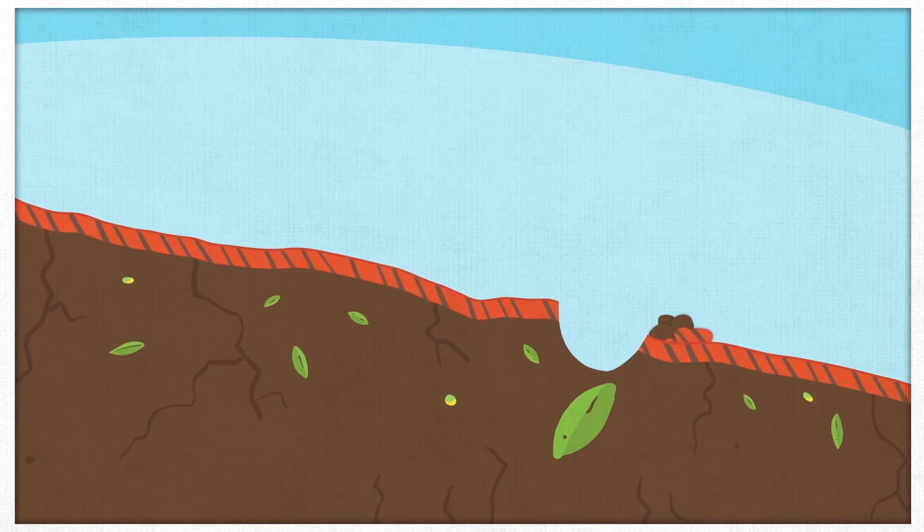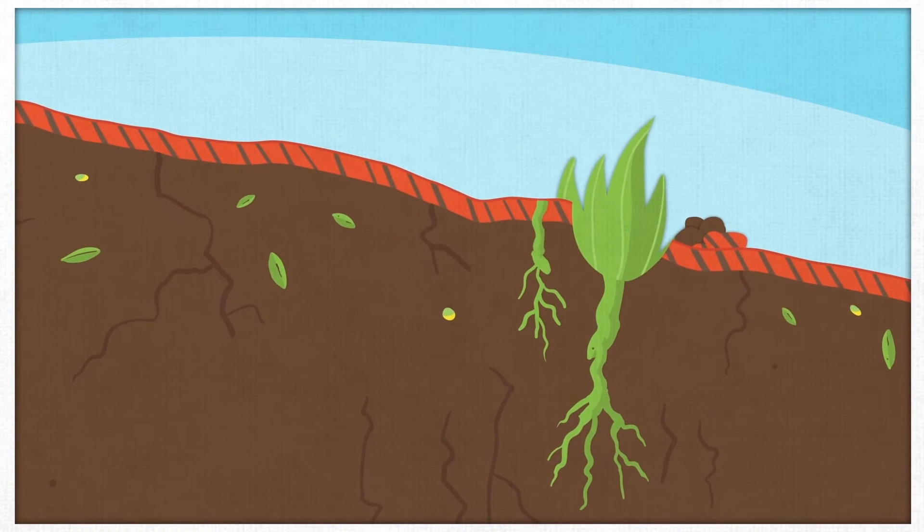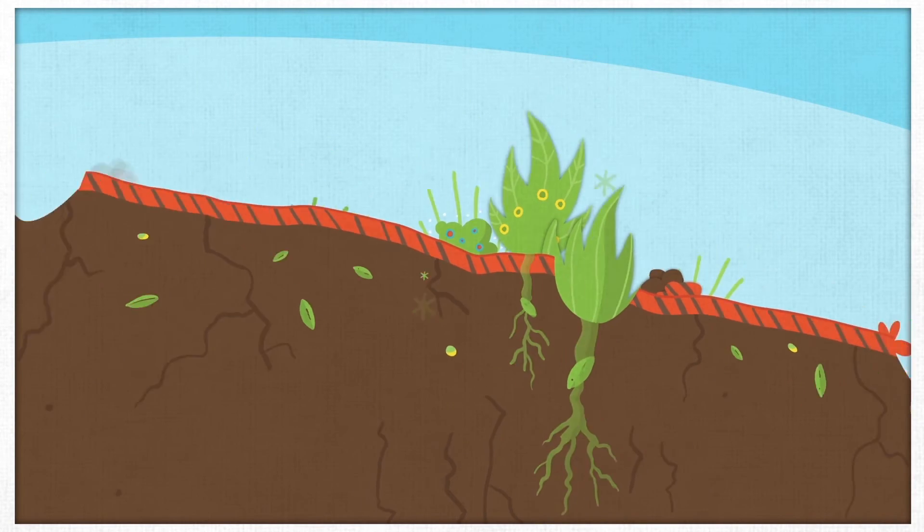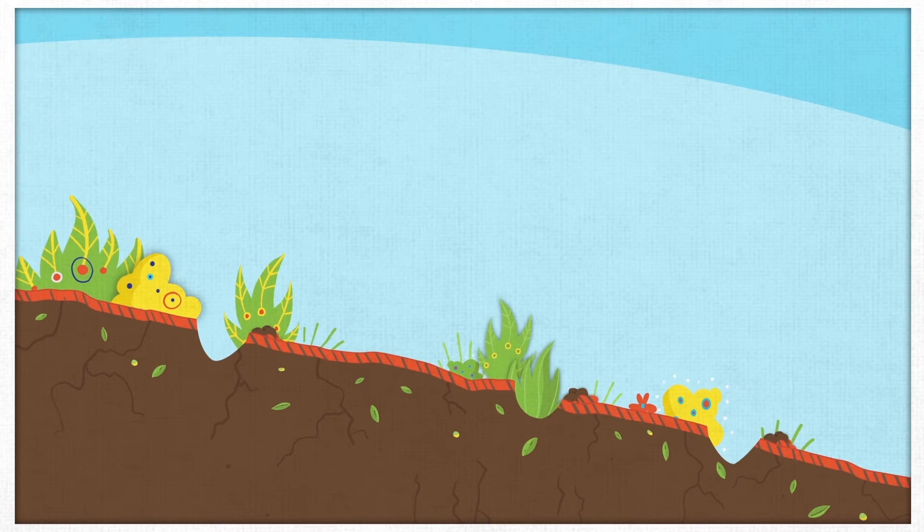The water allows seeds still present in the soil to sprout, and the natural vegetation quickly returns. This effect is strengthened by reforestation and grazing management. The resulting vegetation cools the area and increases moisture in the air through evapotranspiration.